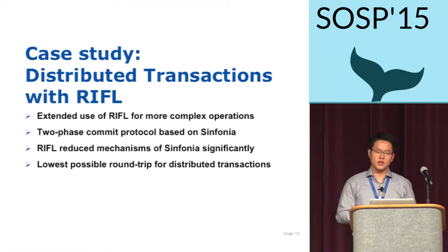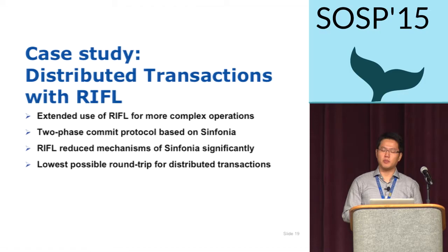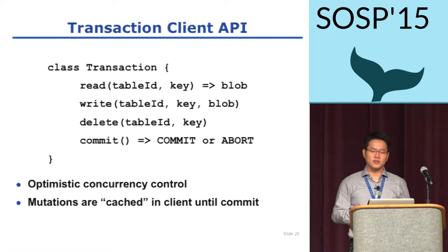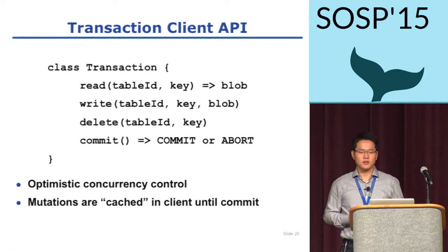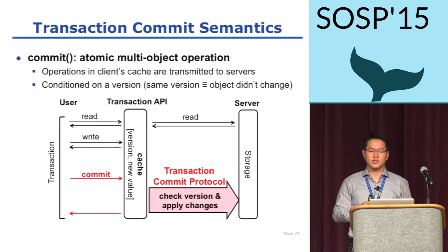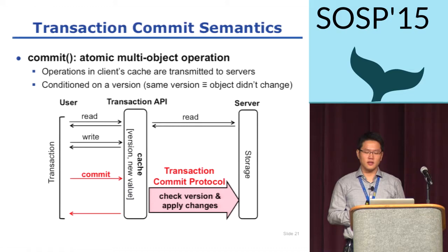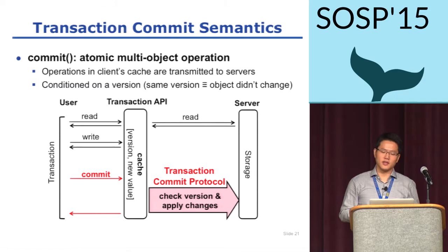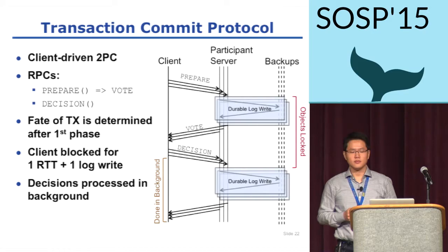Riffle implements a two-phase commit protocol for transactions, which is similar to Symfonia, and it is designed to have the fewest possible round trips. A client can use the transaction class to operate on data, and after finishing, it should invoke a commit. Our transaction uses optimistic concurrency control, and all data mutations are cached locally in the client until the commit starts. As a client invokes commit, all staged mutations are transmitted to servers. Before applying the mutations, the commit protocol checks that versions of objects haven't changed since the last reads. We use two-phase commit, and the next few slides will focus on the transaction commit protocol itself.